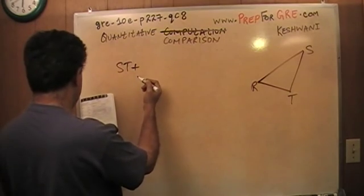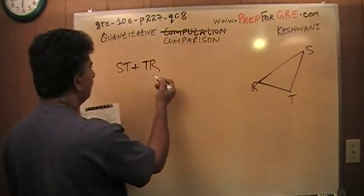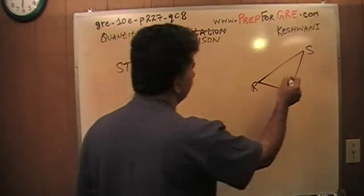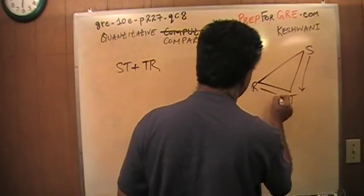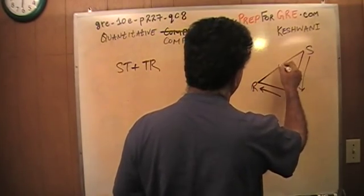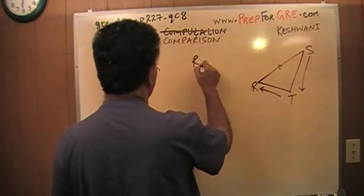plus TR. So they want you to compare this distance and this distance versus the third distance here, RS.